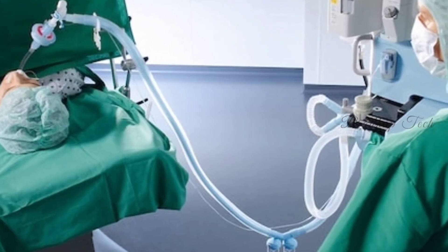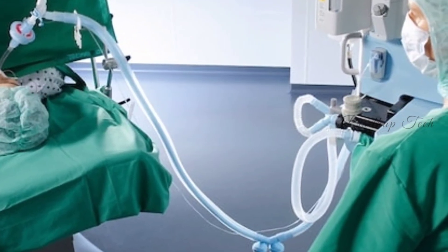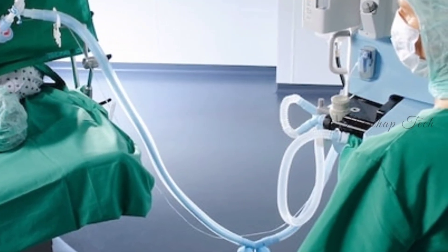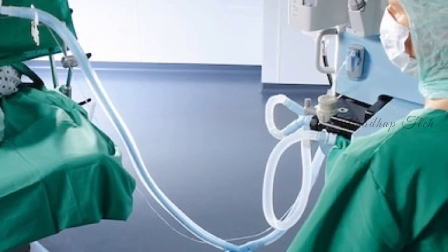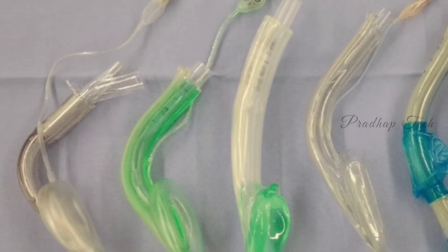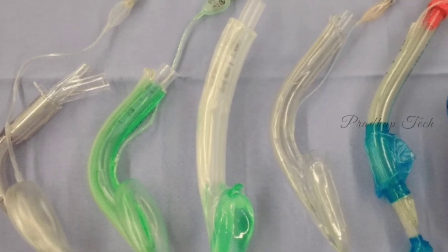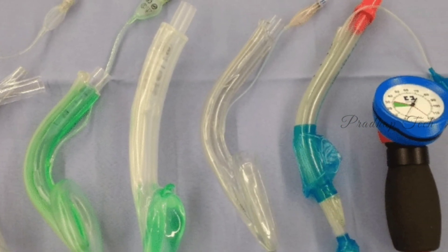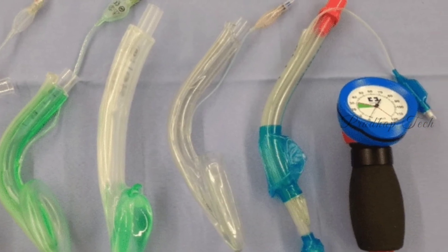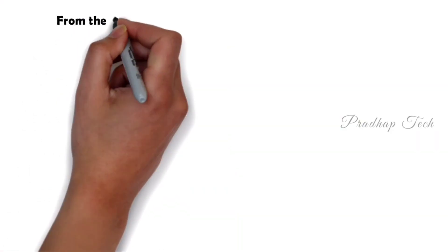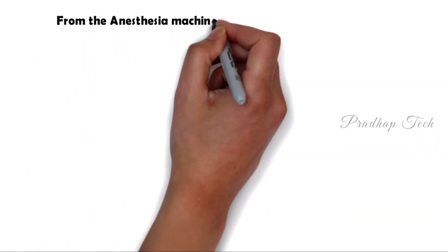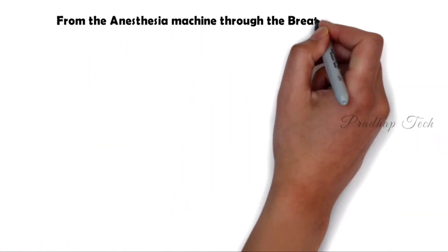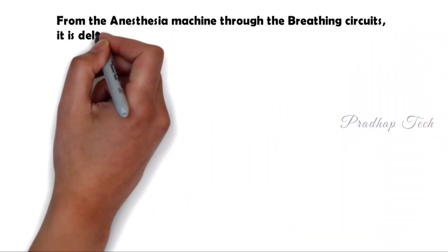From the anesthesia machine, through the breathing circuits, it is delivered to the patients using supraglottic airway devices or infraglottic airway devices. Via these airway devices, the anesthetic mixture is delivered into the respiratory tract.